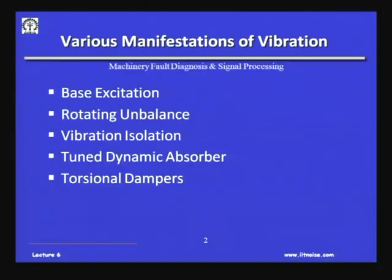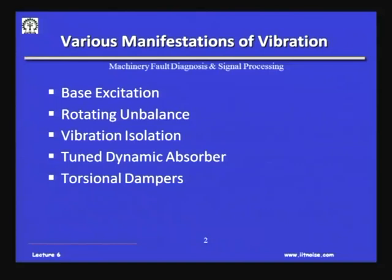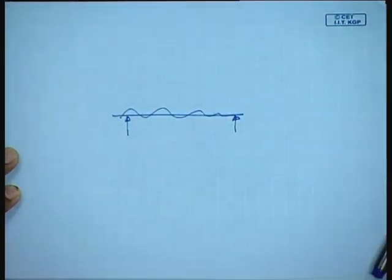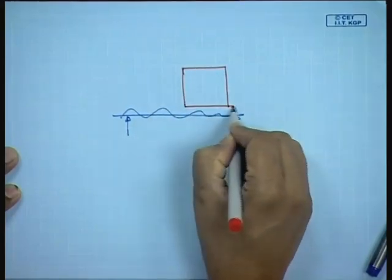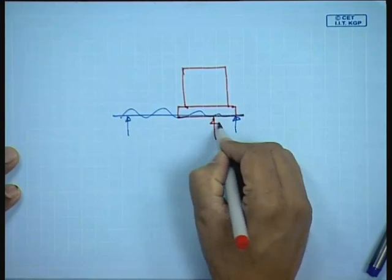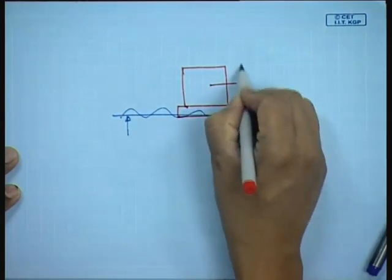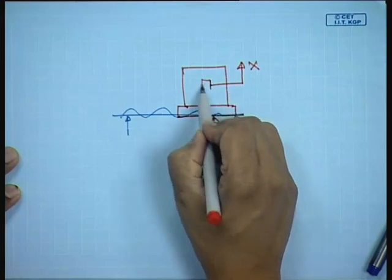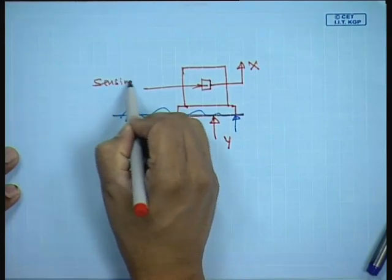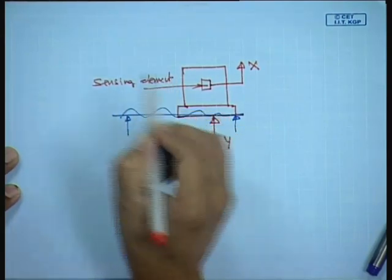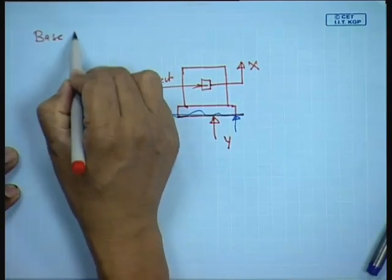Some of the topics we will be discussing today include what happens during the case of base excitation. For example, if you have a surface and because of certain forces there is a motion on the surface, by putting a sensor we can measure this motion y and sense it as a response x of the sensing element. This is the case of base motion.